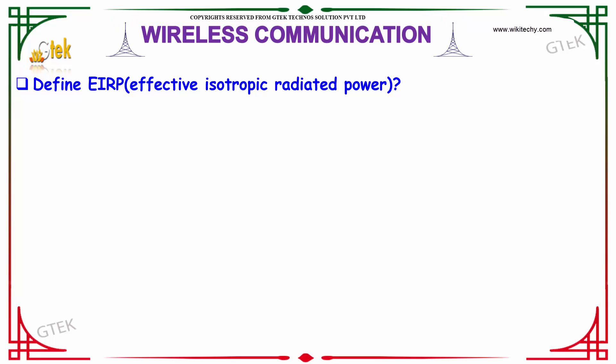Define EIRP. EIRP is abbreviated as Effective Isotropic Radiated Power.